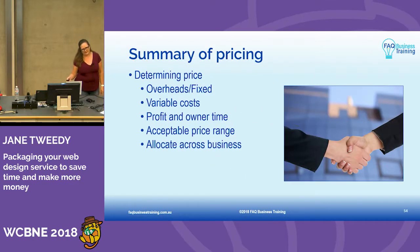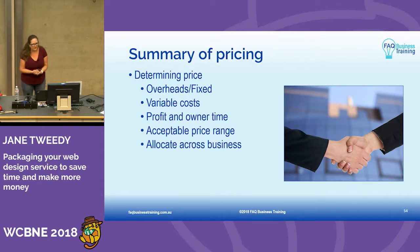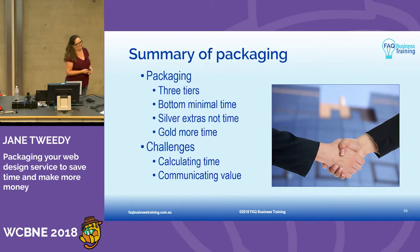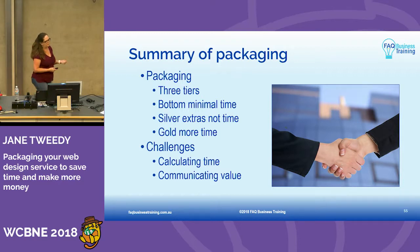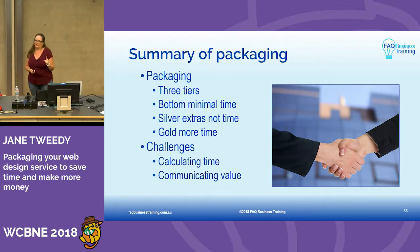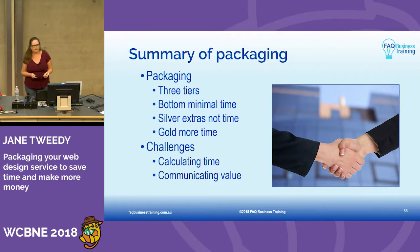So that is it — we talked about pricing and packaging. Determining your price: make sure you think about everything that goes into your price. Don't sell yourself short — too many people do this. Make sure you're including your owner time, your profit. Think about your three tiers: what could you put in that bronze time-saving tier where it looks like you're adding value to the client but really you're saving yourself so much time? For the silver, what value-adds can you put in there? And the gold is the only one you should be adding more time to. I can guarantee there are a lot of people in this room giving people the gold package at the bronze price.